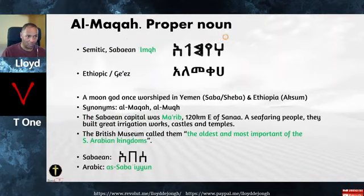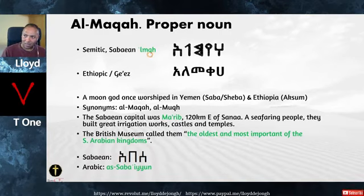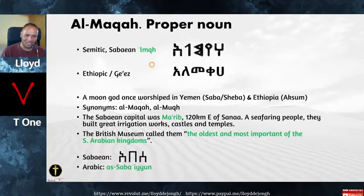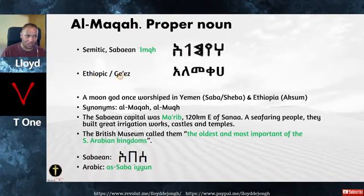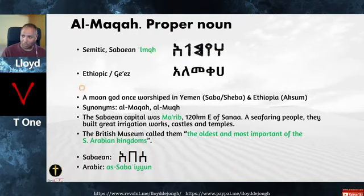Now let's look at Al-Mukkah — the proper noun, his name. The name is Semitic, and in the Sebaean it's Al-Muk. We'll go through at least a dozen versions of this name. This is Al-Mukkah here — notice the very strong similarities in the Ethiopic Ge'ez writing. He's a moon god, once worshipped in Yemen, Sabah or Sheba, and in Ethiopia in Aksum. His synonyms include Al-Mukkah and Al-Mukk. The current name of Mecca is Al-Mukkah Mukkarama — both of these name elements are in the current name of Mecca today.